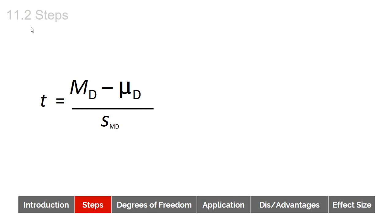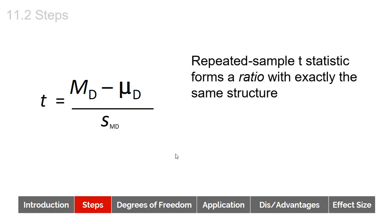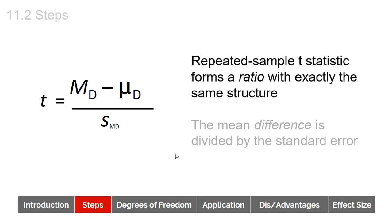This is what the t-statistic looks like for the repeated measures t-test. We have the mean differences that we are observing in our data, minus what we would expect to observe in the population — spoiler alert, that's zero — and then we have the standard error: the amount of difference you would expect to see if no treatment had been involved. It forms a ratio with that same structure, where the mean difference is divided by the standard error, so this is all very familiar to our other t-statistics.